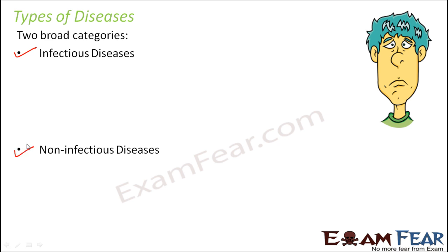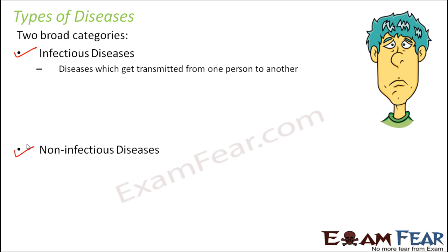In infectious disease, these are diseases which get transmitted from one person to another. Since the disease is present in one person, it can infect another person as well — that is why it is called infectious disease. It can spread in many different ways: by mere touch, by using the same utensils or towels as the infected person, through sexual contact, or through a medium like air or water. These diseases are also called communicable diseases because they get communicated from one person to another.